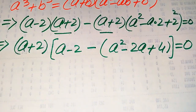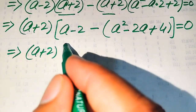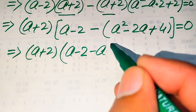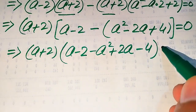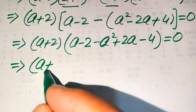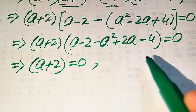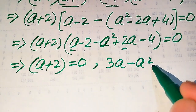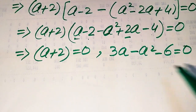So we have (a plus 2)(a minus 2)(a squared minus 2a plus 4) equals zero. Multiplying the negative sign through gives minus a squared plus 2a minus 4. We divide into two cases: the first case is a plus 2 equals zero, and the second case uses the simplified form: negative a squared plus 3a minus 6 equals zero.